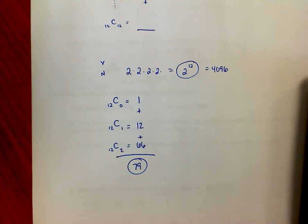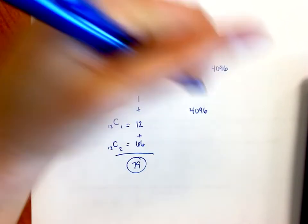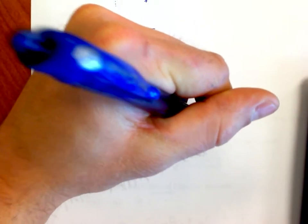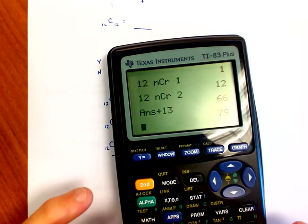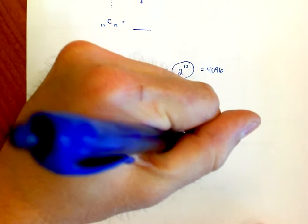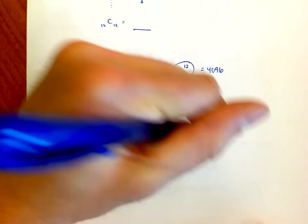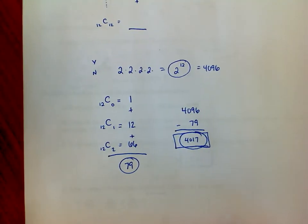And so all I have to do then is say, okay, well I had 4096 choices. 79 of those don't meet the requirement. So if I take those away, 4096 minus 79 is 4017 choices that do. And this is going to be my final answer.